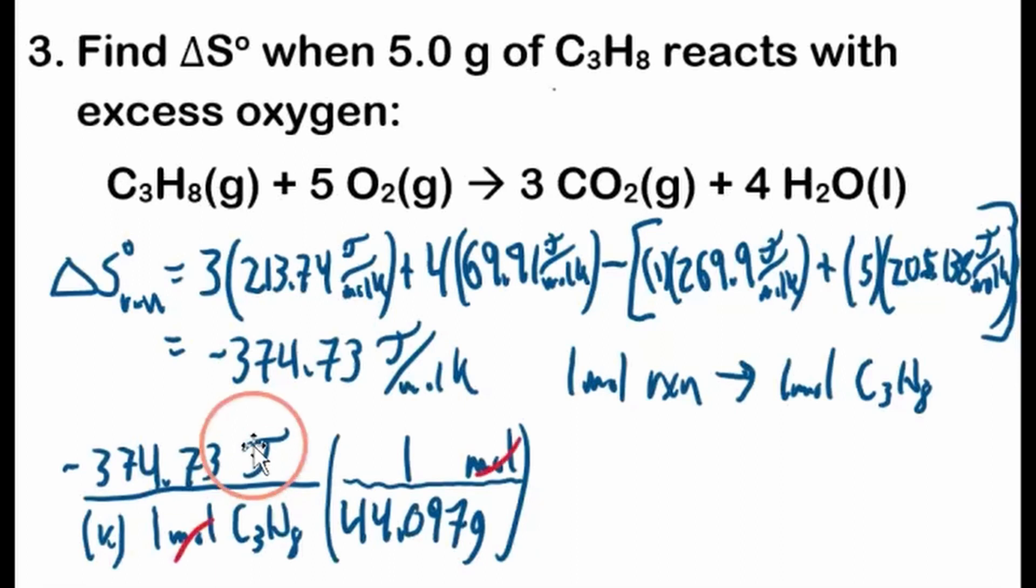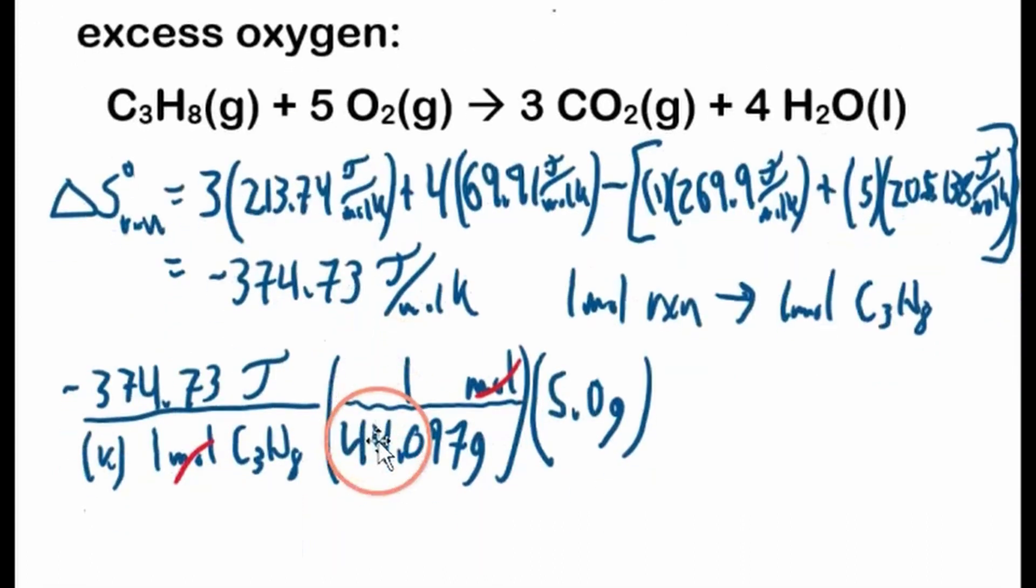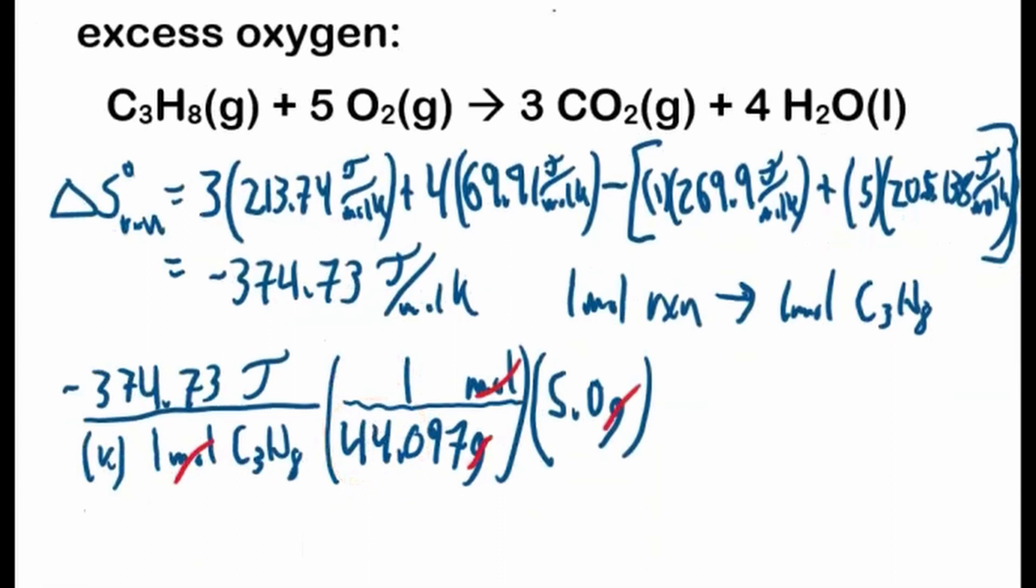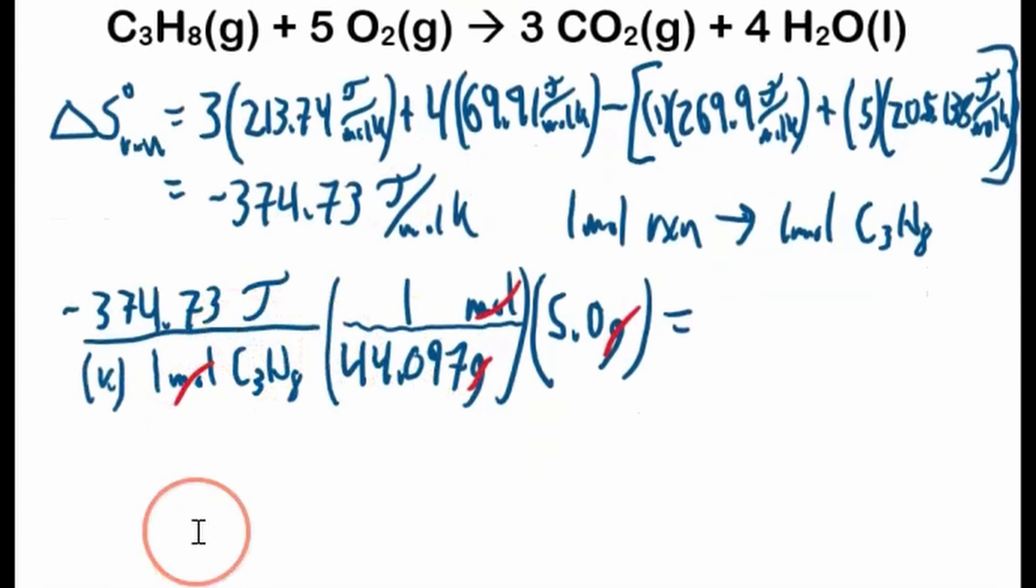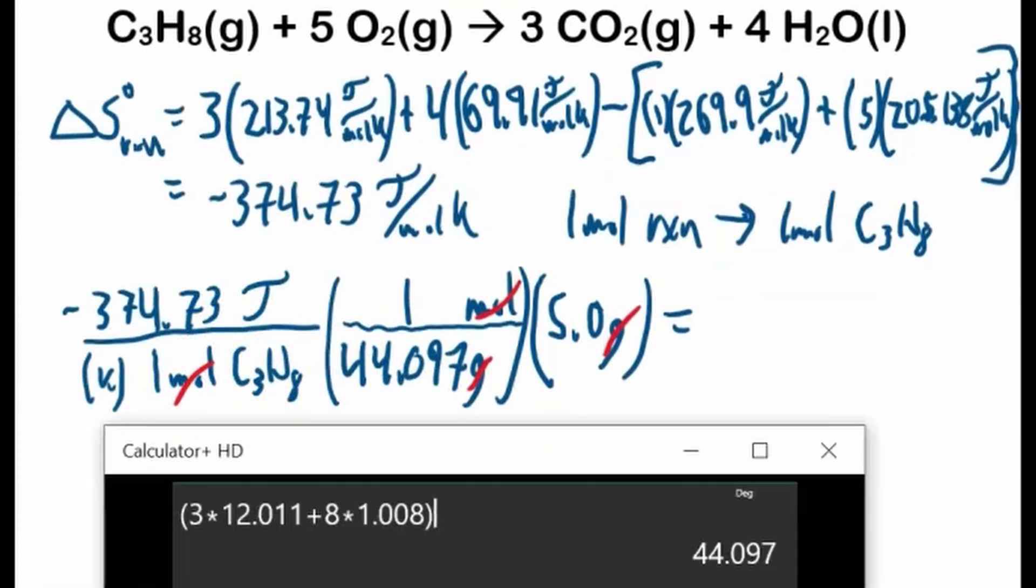Our moles cancel out, now these units would be in joules per kelvin per gram. Right, joules per gram, we don't want it per gram, we want it per 5 grams. So we've got to multiply this whole thing by 5.0 grams to find out what the straight up entropy change is. If we do that, grams cancel out, and we are left with just joules per kelvin, which is what we want for entropy.